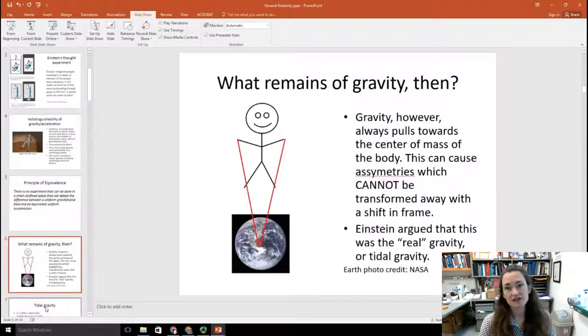There is no experiment that can be done in a small confined space that can detect the difference between a uniform gravitational field and an equivalent uniform acceleration. Well, that led Einstein to feel that uniform gravitational fields were really not so fundamental. I mean, if you can transform them away, then maybe it's not a fundamental thing.